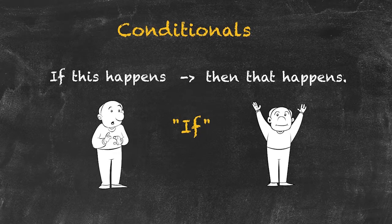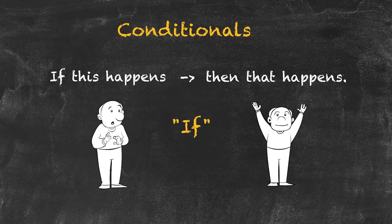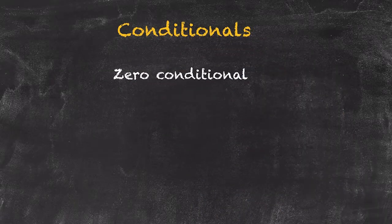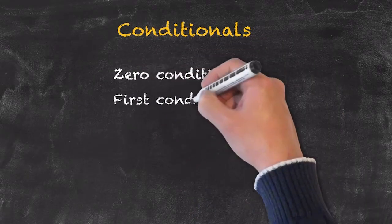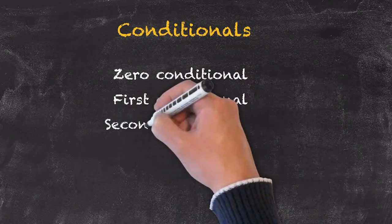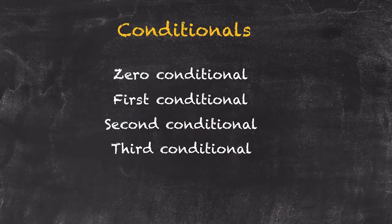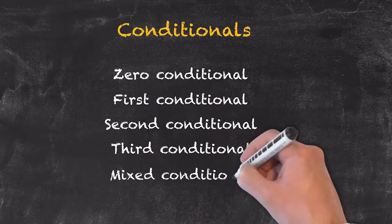The patterns we're going to be looking at in this unit are the five typical patterns that are most commonly taught when teaching English as a foreign language. They're the zero conditional, first conditional, second conditional, third conditional, and mixed conditional.